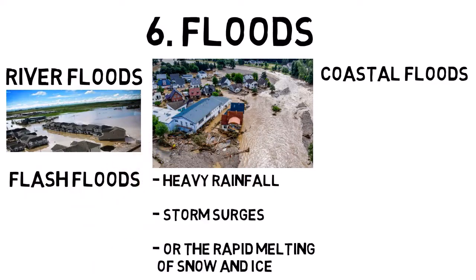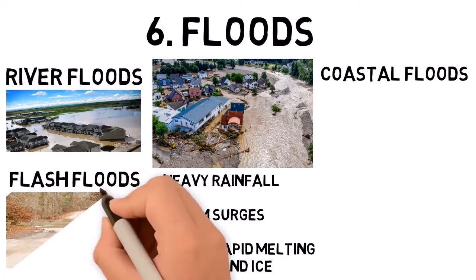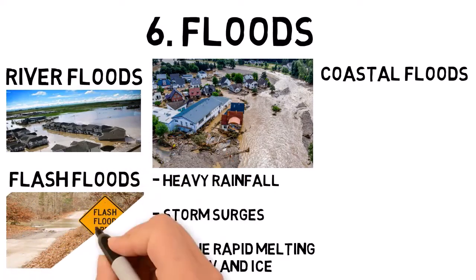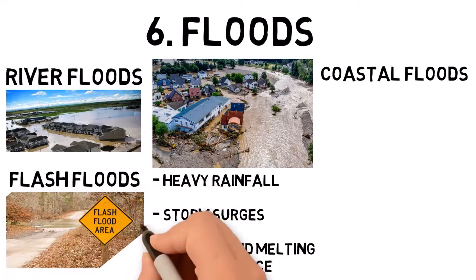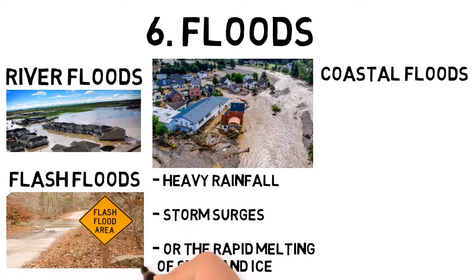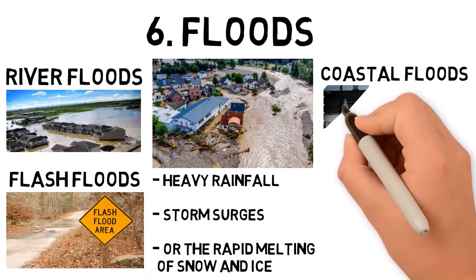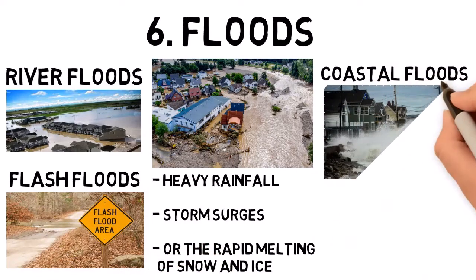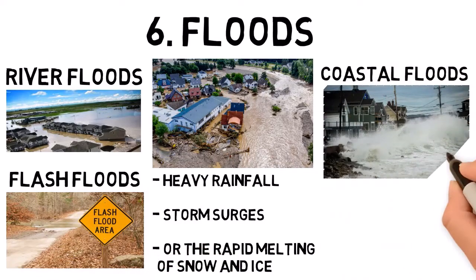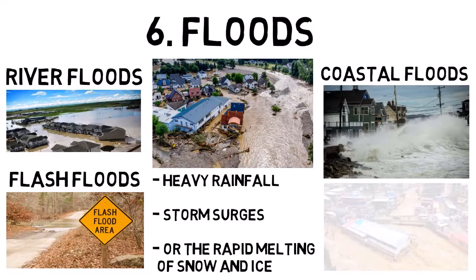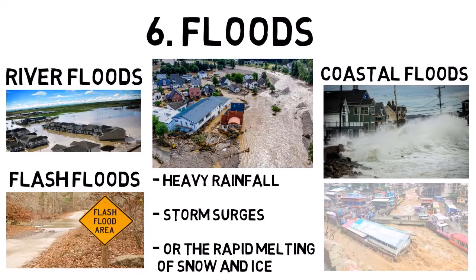Flash floods are sudden and intense floods that can occur within minutes or hours of heavy rain or dam breaks. Coastal floods are caused by storm surges or high tides. Floods can cause extensive damage to homes, infrastructure, and agriculture, and they pose significant risks to human life.